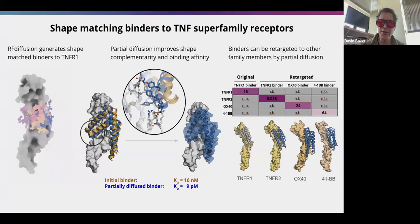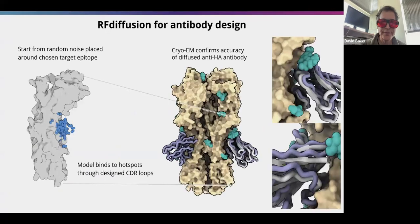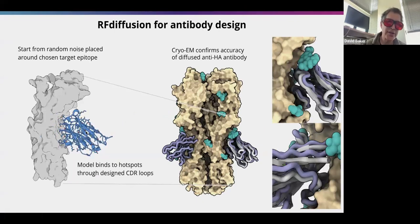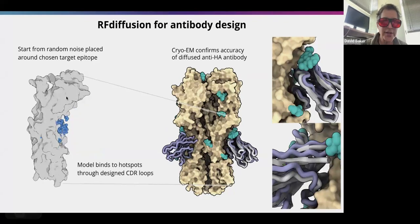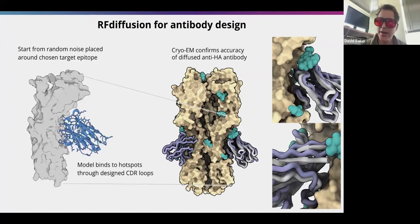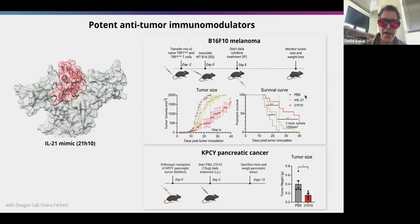There are many cancer targets in this family too, so by applying this noising-denoising strategy we can make binders for those as well. A lot of the pharmaceutical industry is based on antibodies, so we can tell the diffusion process not only to make a binder but to make it into a nanobody. This is a nanobody diffused to bind to influenza hemagglutinin, which matches very closely to the experimental cryo-EM structure.